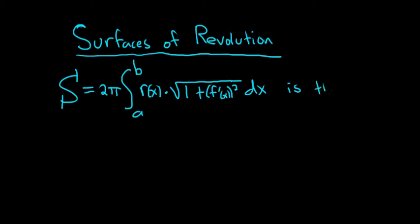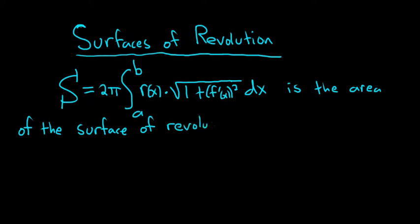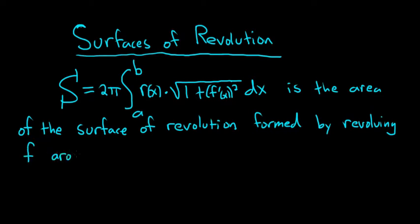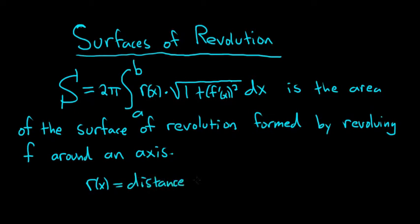This is the area of the surface of revolution formed by revolving our function f around an axis. So what is little r? Little r of x is the distance — you can think of it as a distance function — between the graph of f and the axis of revolution.